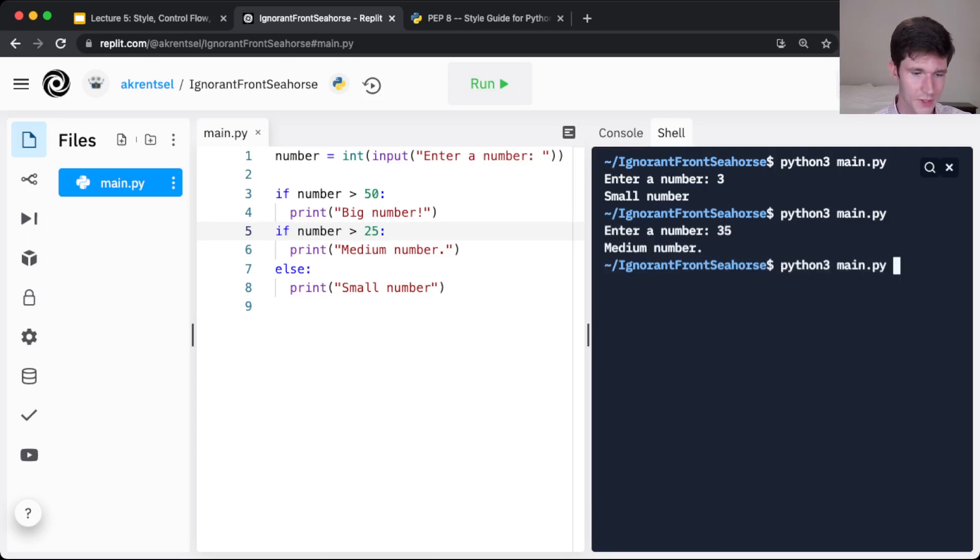But if I enter an even bigger number, like 75, this now prints out both big number and medium number. And that's because this if is met. So if number is greater than 50, we print big number.